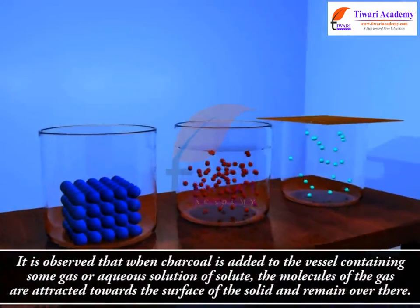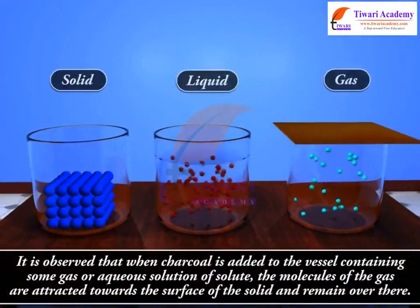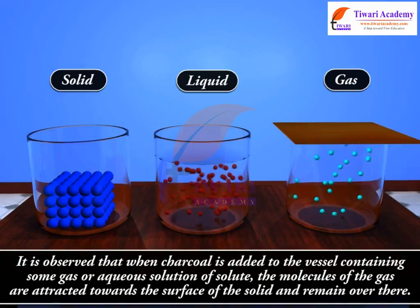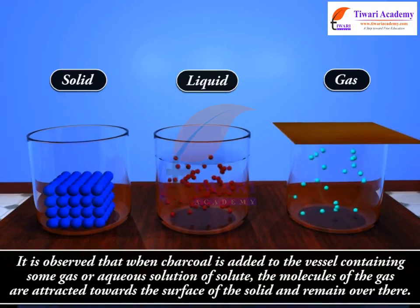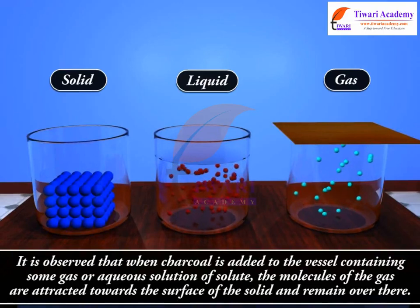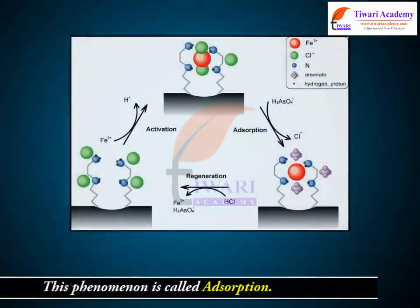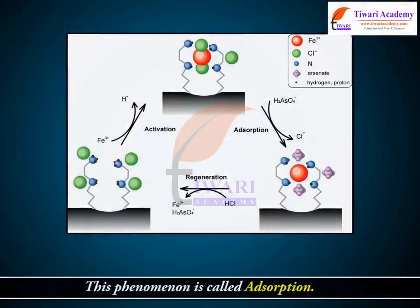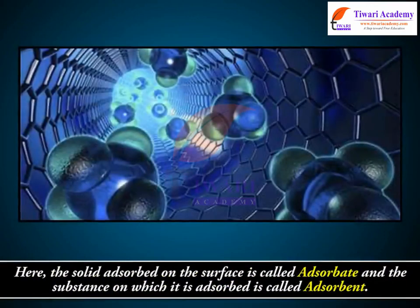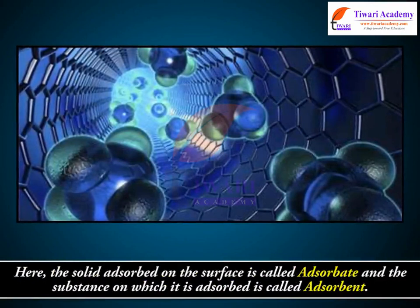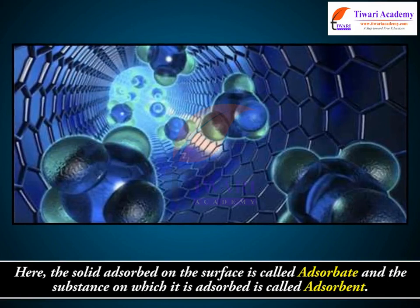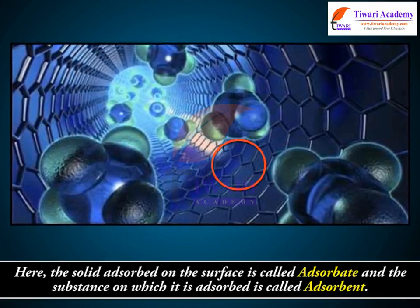It is observed that when charcoal is added to a vessel containing some gas or aqueous solution of solute, the molecules of the gas are attracted towards the surface of the solid and remain over there. This phenomenon is called adsorption. Here the solid adsorbed on the surface is called adsorbate and the substance on which it is adsorbed is called adsorbent.